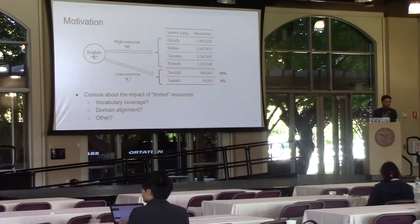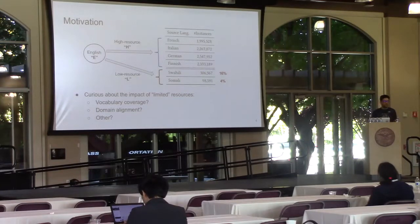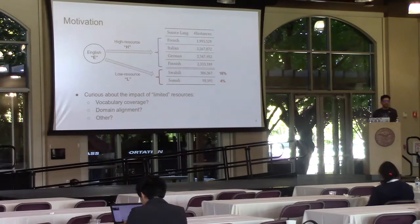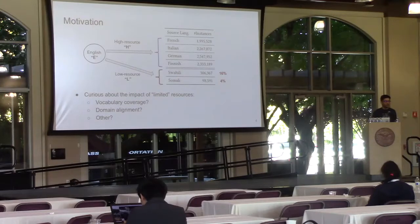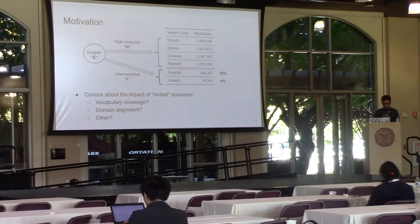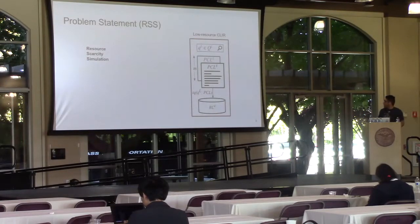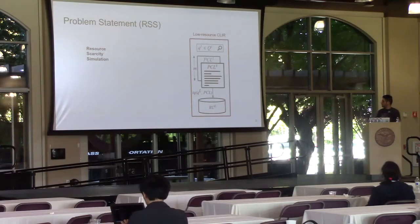In this study, we are curious about what problems this limited resource causes. Is it vocabulary coverage, is it domain alignment, or other problems? One side of our translation is always English, which we show as E, and the other side of our resources we show as L.